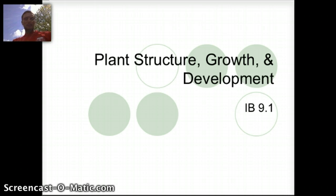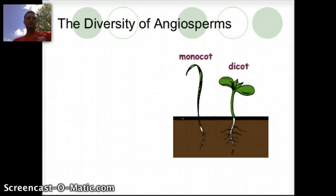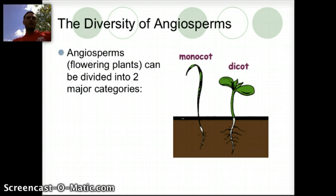In this video we're going to look at some different types of plants and their growth and development. We're going to be specifically focusing on angiosperms, which are the flowering plants. They can be divided into two major categories, either monocots or dicots, and that's really what we're going to focus on — looking at the differences between monocots and dicots.